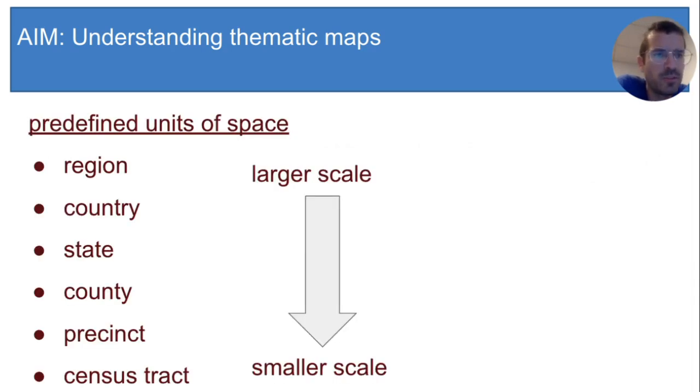Here are some other examples of predefined areas you might see in chloropleth maps, and they are arranged in descending scale. At the global level, at a very large scale, we have regions like Latin America or Africa.